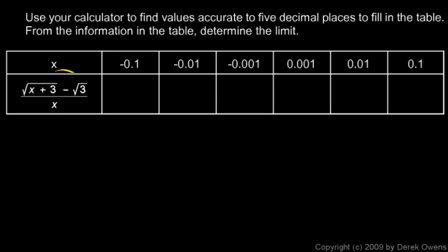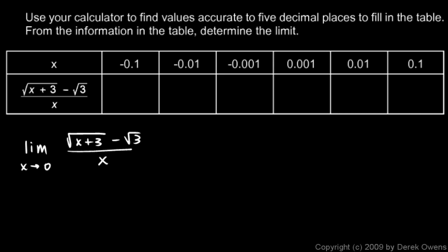Here's the problem: we want the limit as x approaches zero of the square root of x plus 3 minus the square root of 3, all over x. We can't just plug in 0 for x because we'd have a zero denominator — in fact, we'd have zero over zero, an indeterminate form we can't calculate directly.